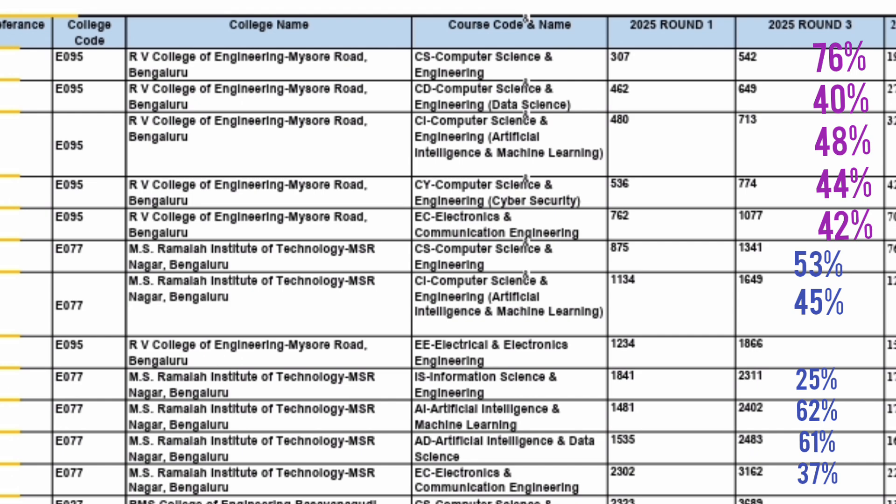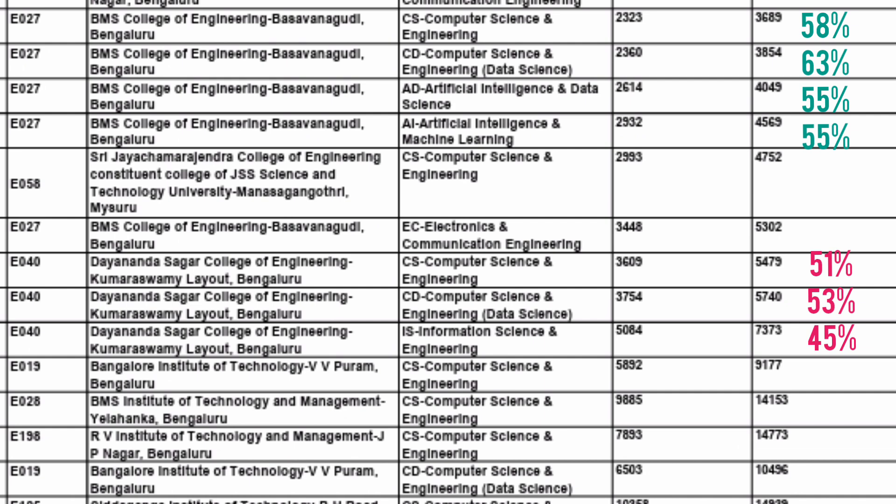Looking at BMS College of Engineering, shown in green, there was also a good jump in CSE-related branches. For BMS CSE, round 1 was 2323 and round 3 became 3689 — a 58% jump. You calculate this as 2323 × 1.58 = 3689. Similarly, Dyanasagar College of Engineering shows around a 50% jump in most CSE-related branches. So there was a big jump from round 1 to round 3 across most colleges and branches.